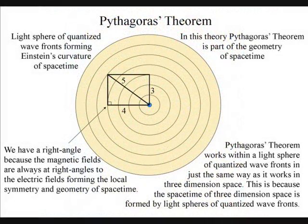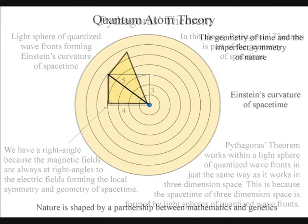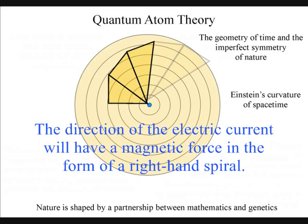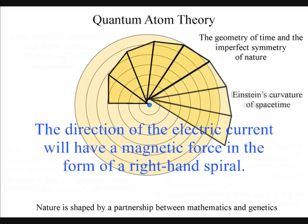The magnetic fields are always at right angles to the electric fields, forming the local space-time symmetry and geometry. This will spiral out, creating visual and mathematical patterns of our universe.